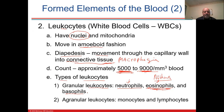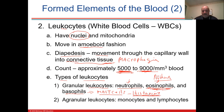Basophils become mast cells in the tissue — the mast cell is the tissue version of a basophil. Mast cells release histamine, which is definitely released in an allergic reaction and when blood vessels need to dilate, like if you get stung by a bee. Histamine is released because of inflammation, and the excess release can be worse than the actual condition. That's why you take Benadryl — it's an antihistamine treating the symptoms.